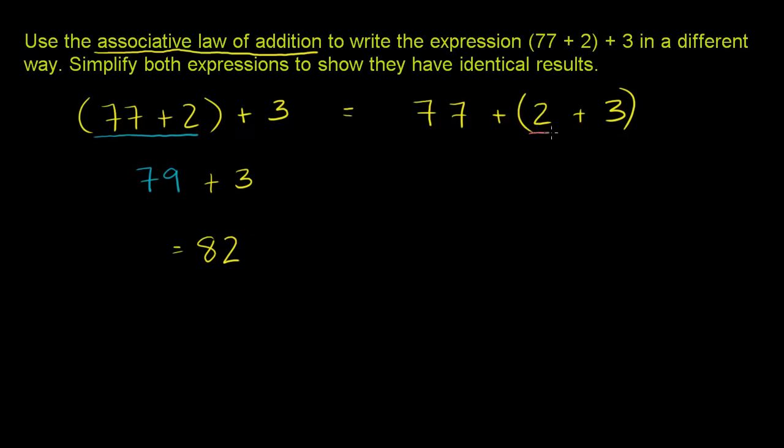So 2 plus 3 is 5. So this evaluates to 77 plus 5. And 77 plus 5, once again, is 82. So it doesn't matter how you associate the numbers. Either way, you get 82. And that's the associative law of addition.